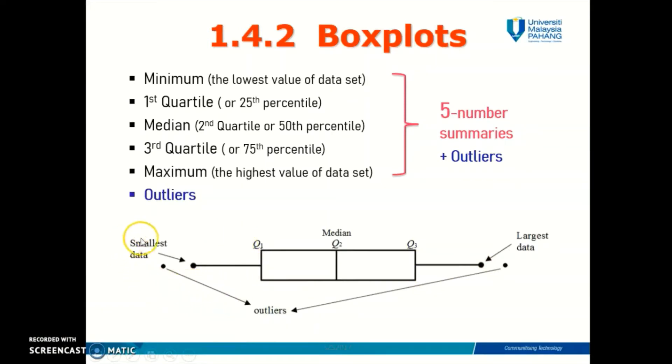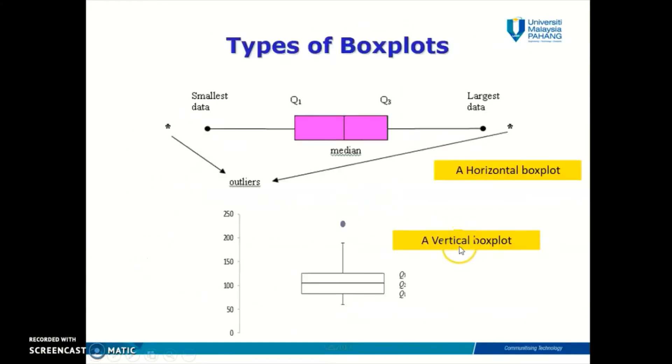This is a simple example of a horizontal box plot. There are two types of box plot: horizontal box plot if you draw it on an x-axis, and a vertical box plot if you draw it on a y-axis.